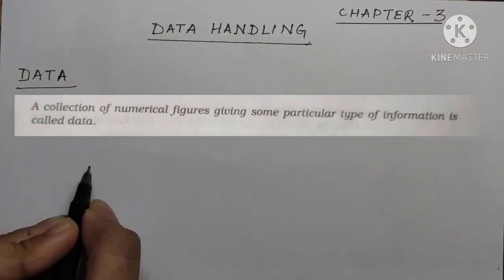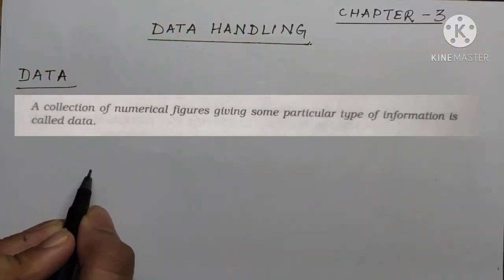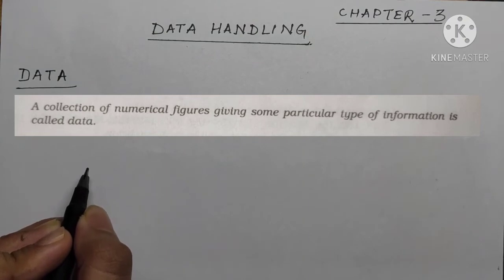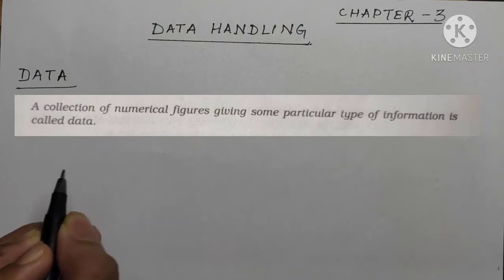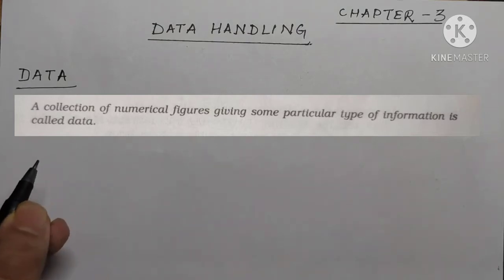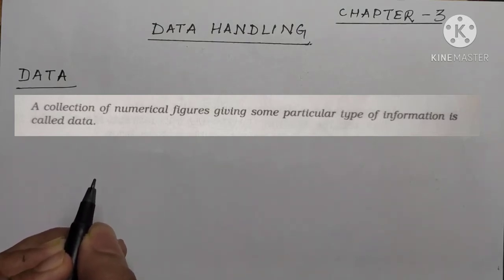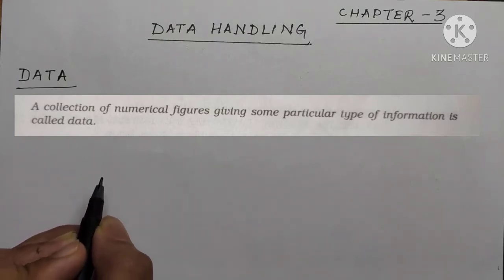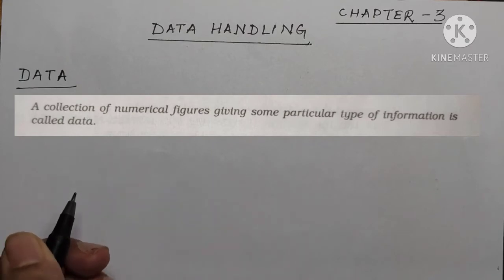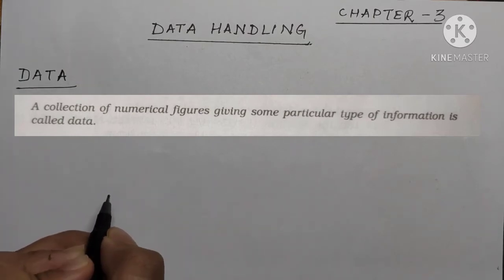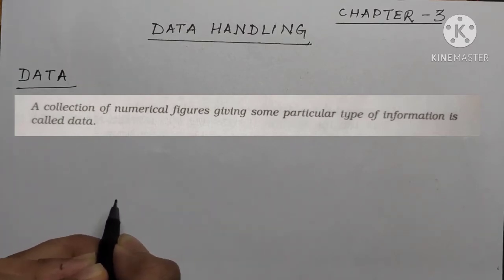Data means a collection of numerical figures giving some particular type of information is called data. Data is some collection of numerical figures or observations that give us a particular type of information.